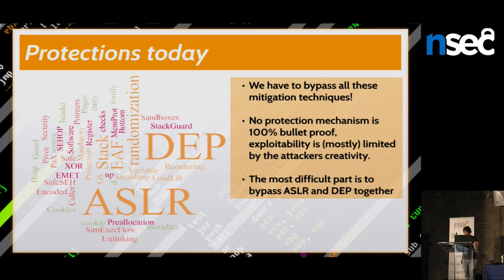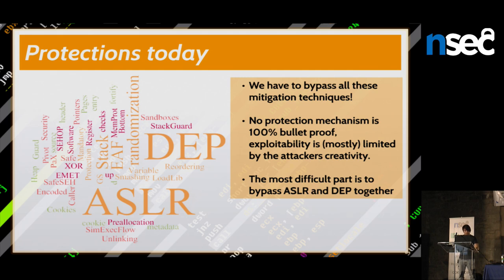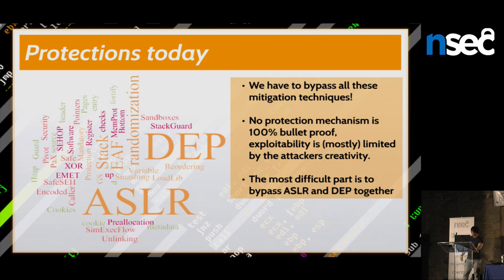Nowadays everything is harder. Vulnerabilities are harder to find — no more low-hanging fruit. You also have many different protections, and the two biggest ones are data execution prevention (DEP) and address space layout randomization (ASLR). In my opinion, these two protections together are the hardest to bypass. Each protection on its own is quite simple to bypass, but if both are present, it's quite hard.